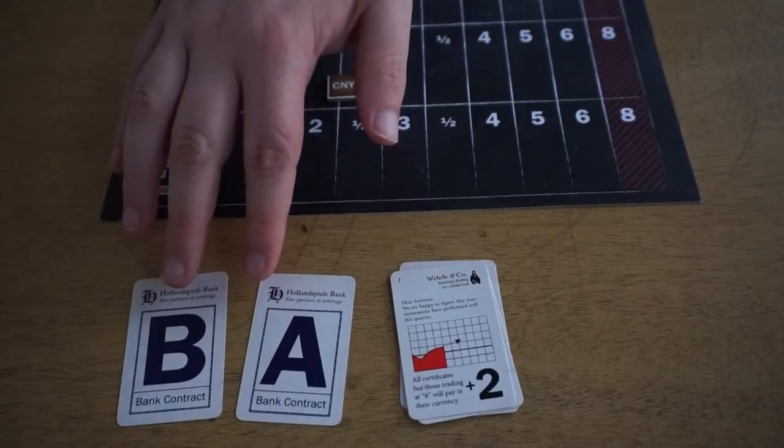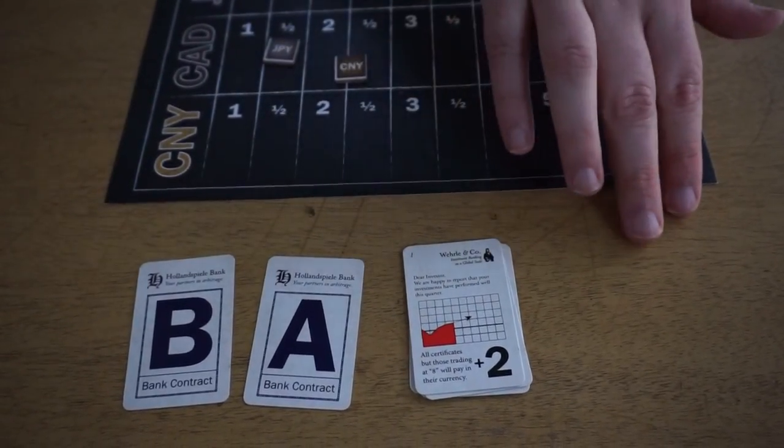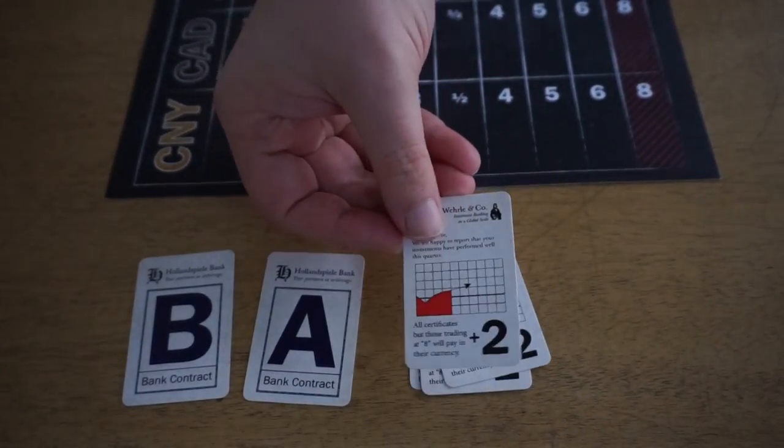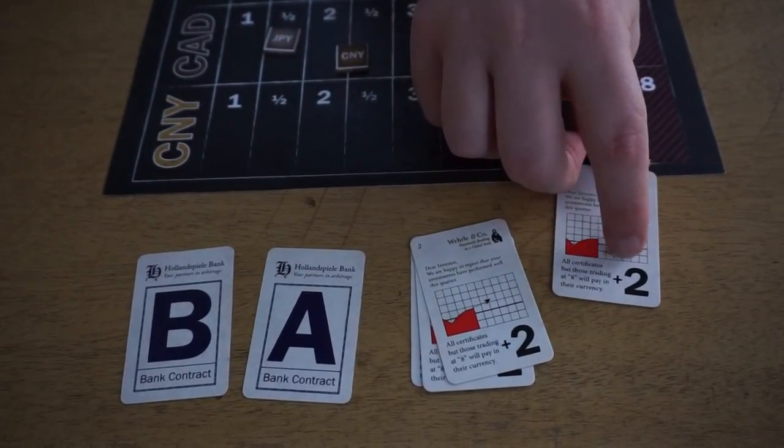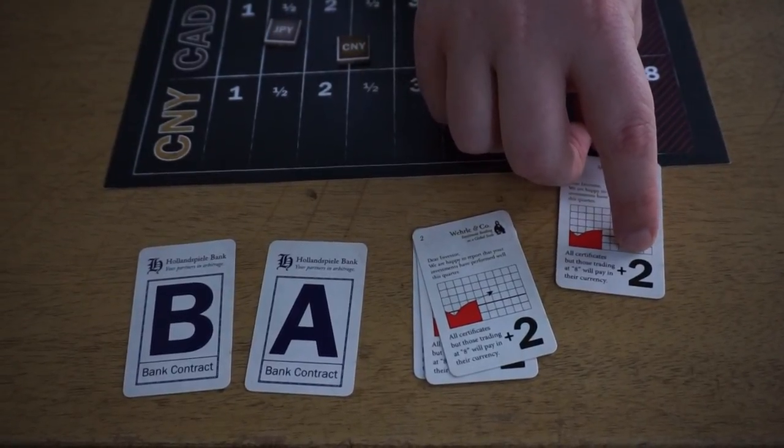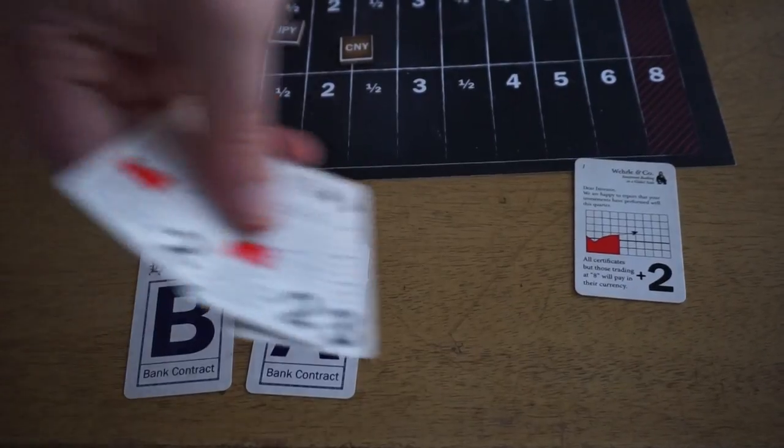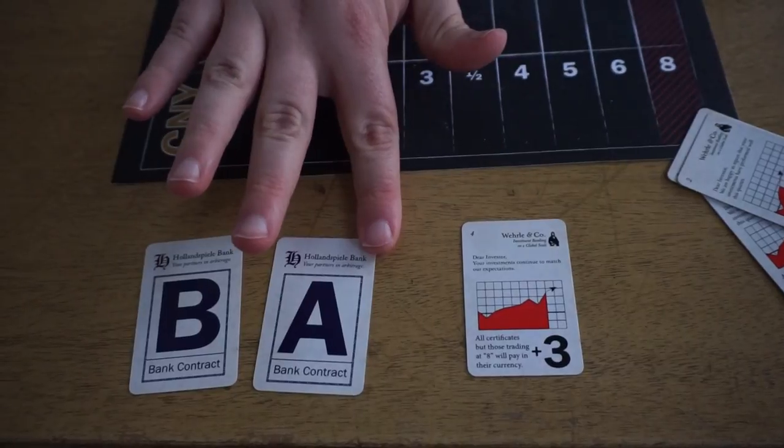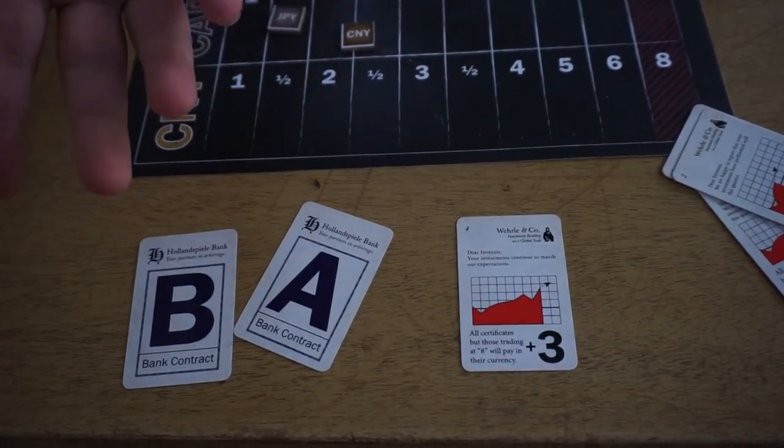The other thing in the contract queue are these dividend cards. And this is basically the timer of the game. When one of these is resolved, you remove the top card, you pay dividends for each stock you have, so two bucks of whatever the currency is for each stock you have in that currency. And then you move the stack to the back. And these eventually run out. When the last one is resolved, any contracts behind in the contract queue are immediately resolved one after another. And that ends the game.